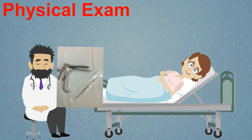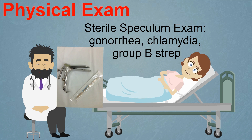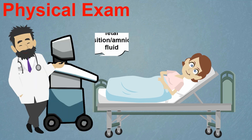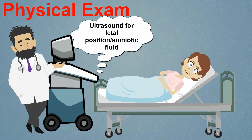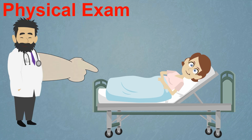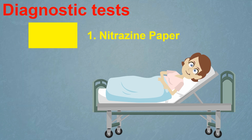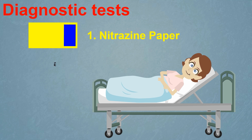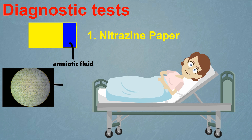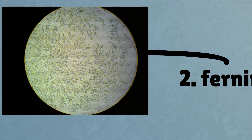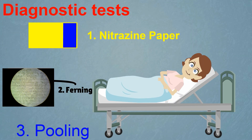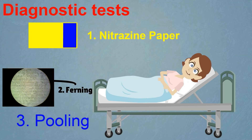For the physical exam, a sterile speculum examination should be performed to visually assess the cervix and to swab for cervical gonorrhea and chlamydia. A group B strep culture should be obtained as well. An ultrasound should be performed to assess fetal position as well as to assess the amount of amniotic fluid. Remember to minimize digital cervical examinations to decrease the risk of infection. For diagnostic testing, nitrazine paper is used — amniotic fluid is alkaline with a pH greater than 7.1, and vaginal secretions have a pH of between 4.5 to 6, so amniotic fluid will appear blue on nitrazine paper. Ferning refers to the pattern of arborization when amniotic fluid is placed on a slide and allowed to dry. And finally, pooling refers to the filling of the speculum with amniotic fluid.